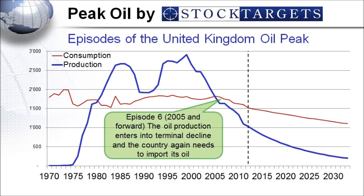Episode number six: the production enters into terminal decline. The production is now lower than consumption again, and the gap between production and consumption is widening over time. Why is this a terminal decline? Simply because the UK no longer has any oil reserves.